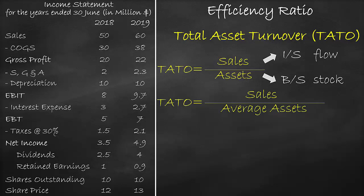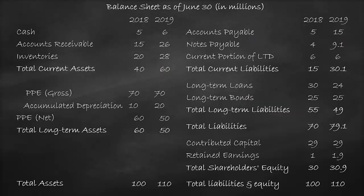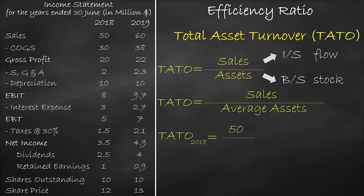Let's calculate the total asset turnover ratio for the year 2018. Sales is equal to $50 million. Looking at the balance sheet for assets — in 2018, it is the first year of operations, so we do not have average assets as we do not have the previous year. We have assets in 2018 of $100 million. So in the formula, we divide by assets of $100 million, which is equal to 0.5 times.